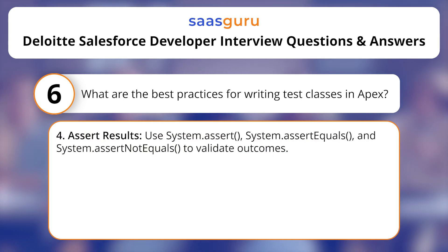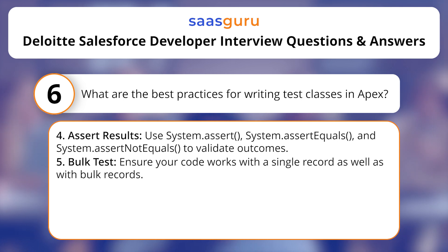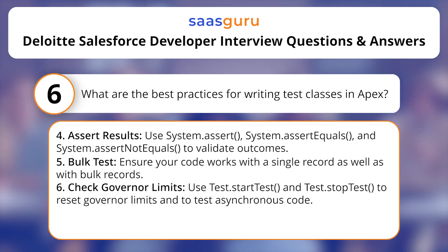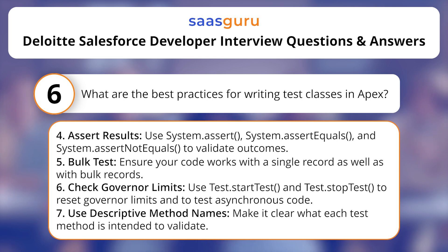Assert results — use System.assert, System.assertEquals, and System.assertNotEquals to validate outcomes. Bulk test — ensure your code works with a single record as well as with bulk records. Check governor limits — use Test.startTest and Test.stopTest to reset governor limits and to test asynchronous code. Use descriptive method names — make it clear what each test method is intended to validate.